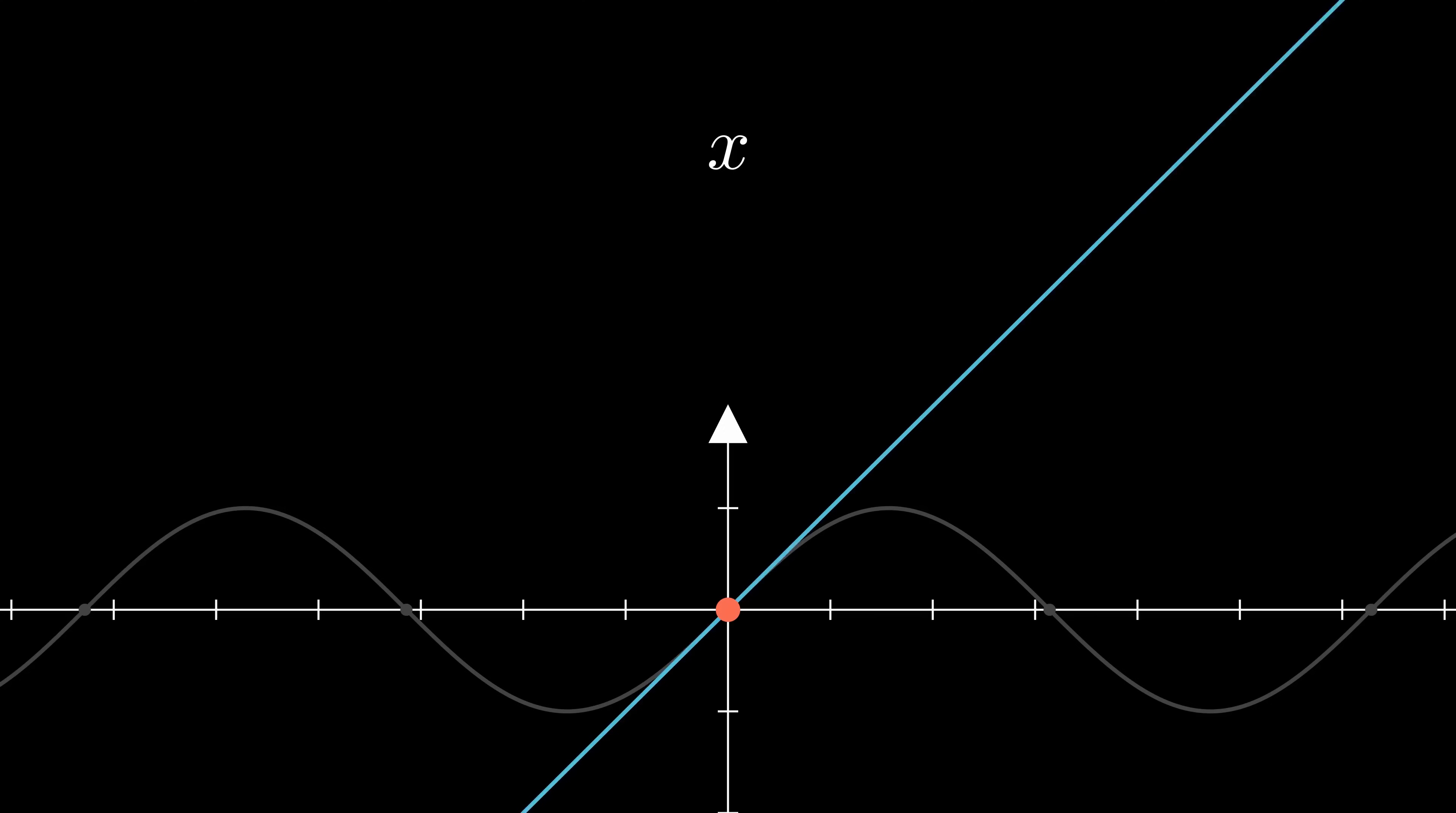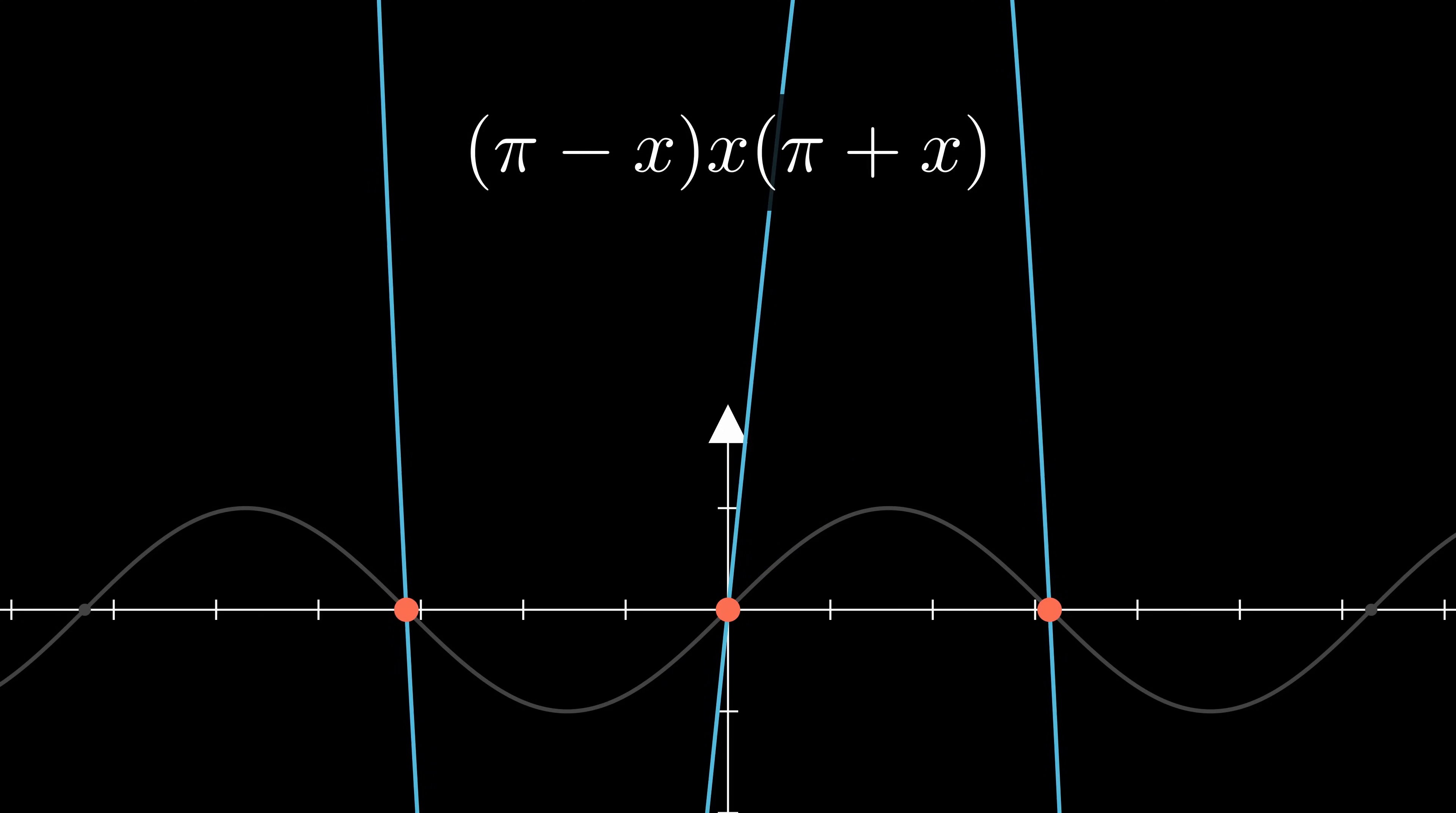Then, we can match the next two zeros by multiplying by pi plus x and pi minus x. This puts the zeros in the right place, but now we have a problem. Our function is way too steep. But we can fix this without too much trouble. To see how, let's go back to what we had with just x.